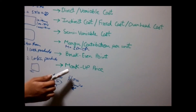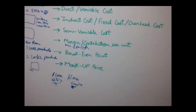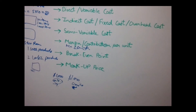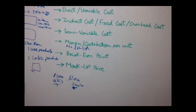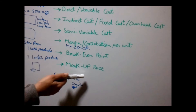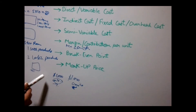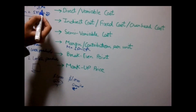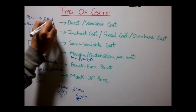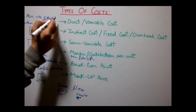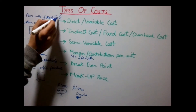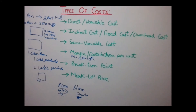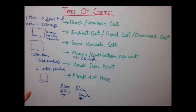Another concept is Markup Price. When manufacturing or selling a product, manufacturers add a certain amount to their cost price — the resulting price is known as the Markup Price. For example, if the cost price of a pen is Rs.5 and they add Rs.1 as markup, the total Markup Price is Rs.6.